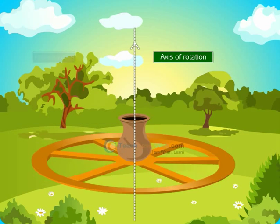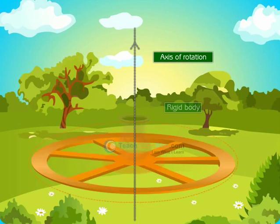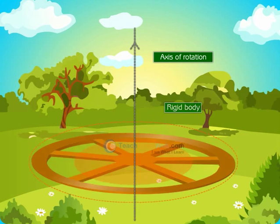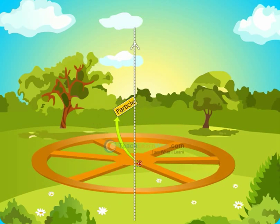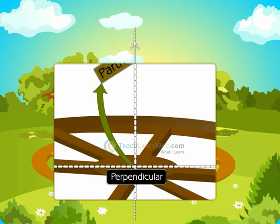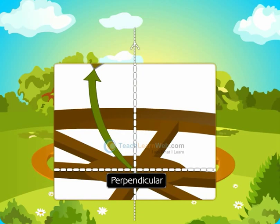Now, you might have noticed that in rotation of a rigid body about a fixed axis, every particle of the body moves in a circle which lies in a plane perpendicular to the axis and has its center on the axis.